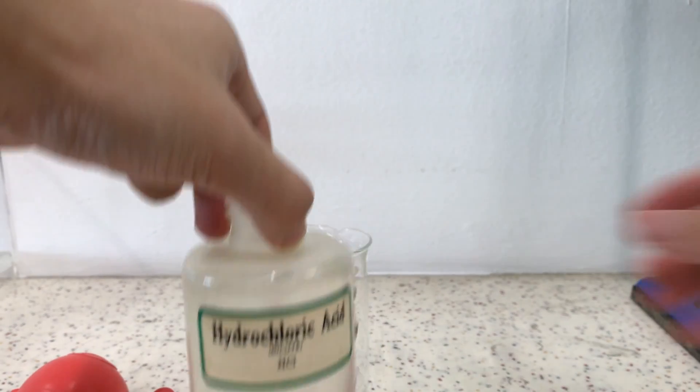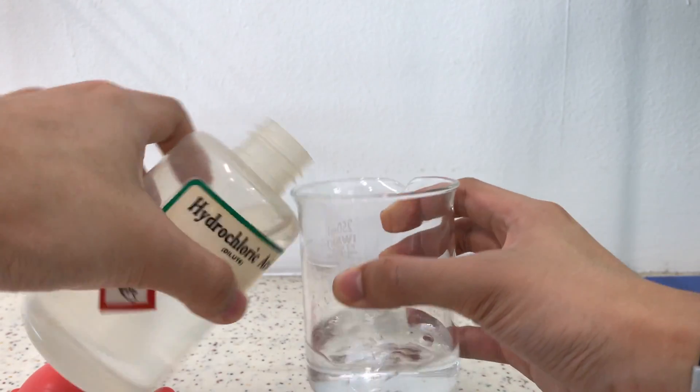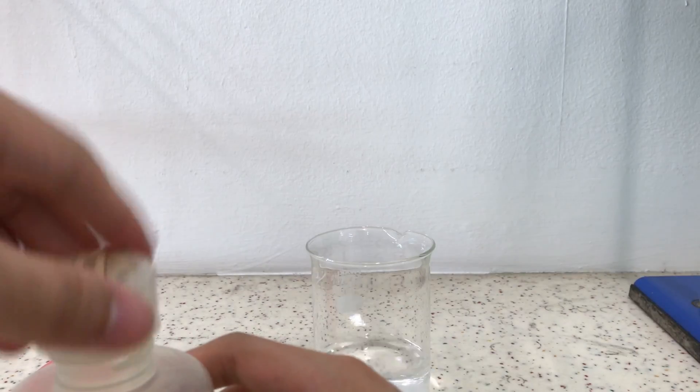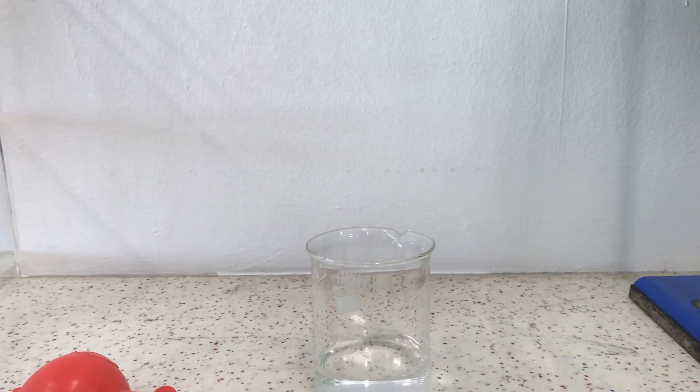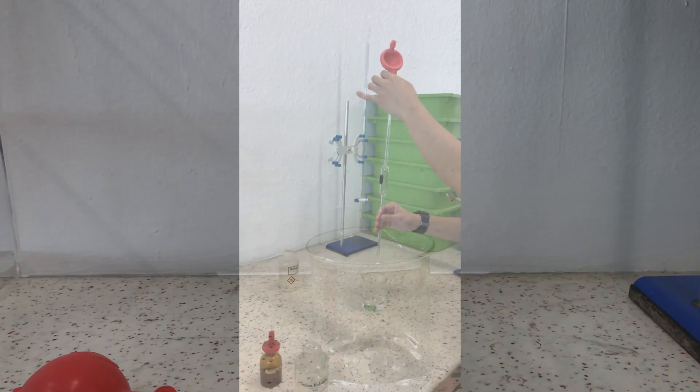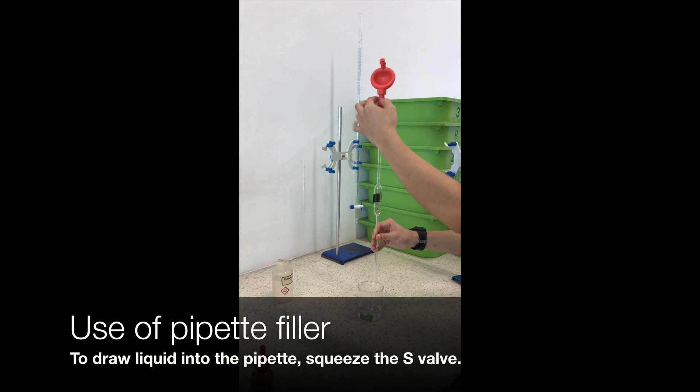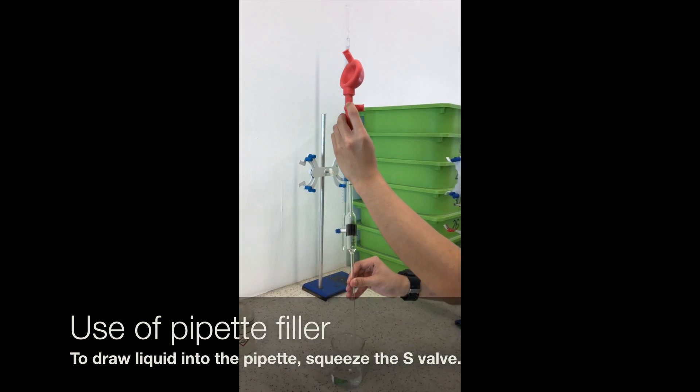Let's say we want hydrochloric acid to be placed in the conical flask. We will put some into the beaker first. And to draw up solution into the pipette, we press the S button which stands for suction.